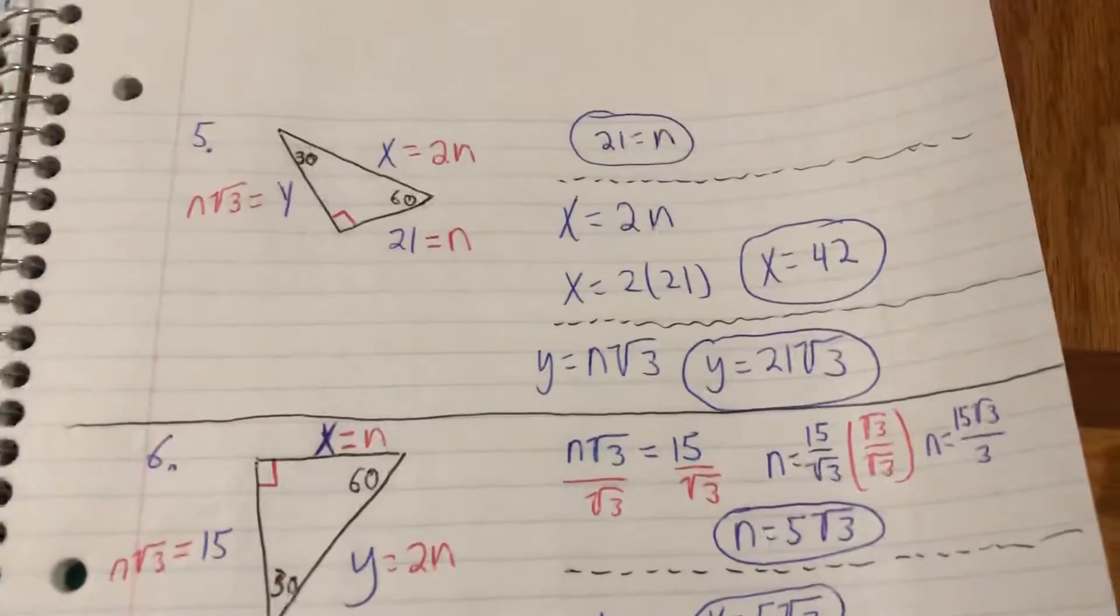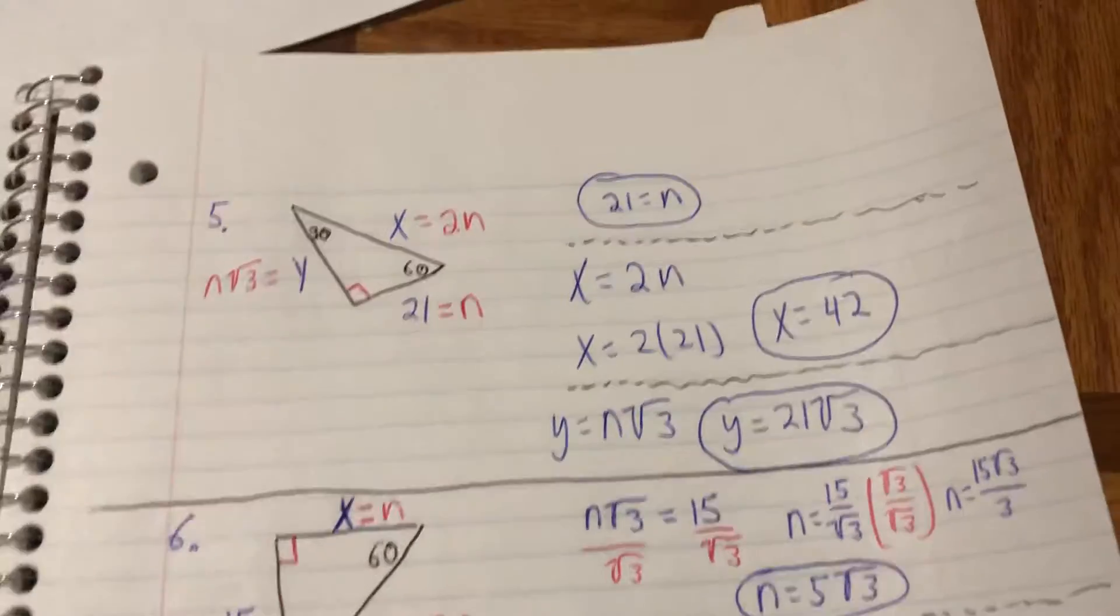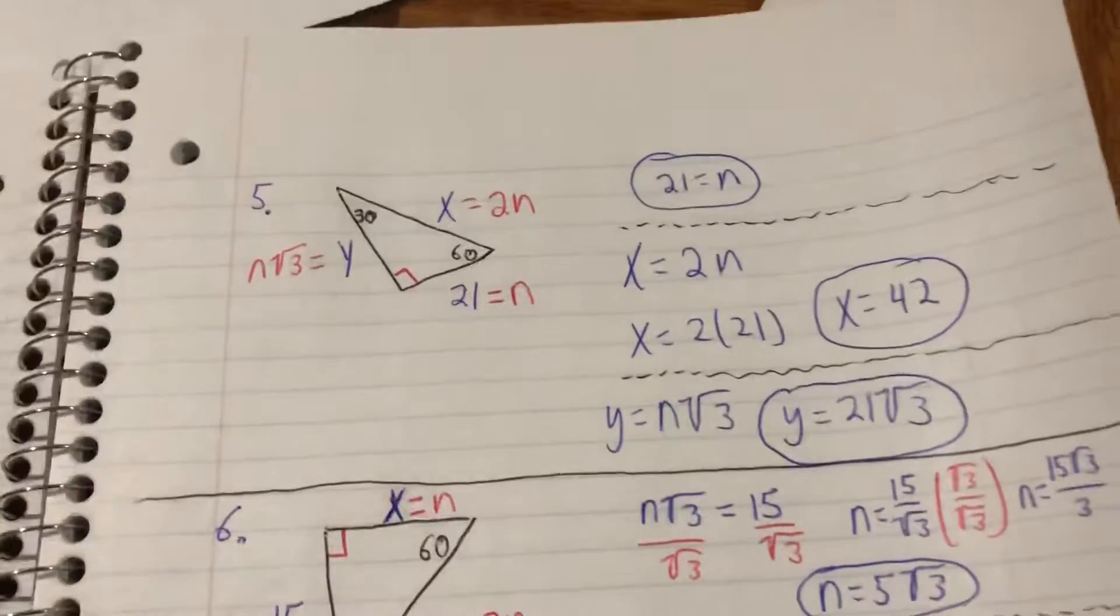All right honors geometry, let's see how you did on the 30-60-90s. Now if it didn't go well the first time around, don't panic. I'll walk you through these and hopefully we understand it better for the assignment.